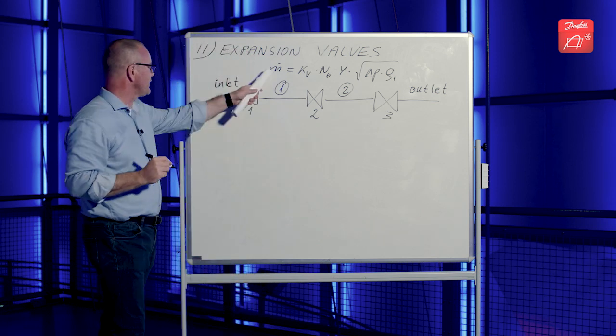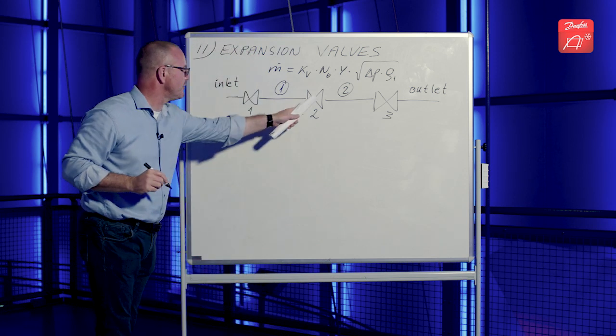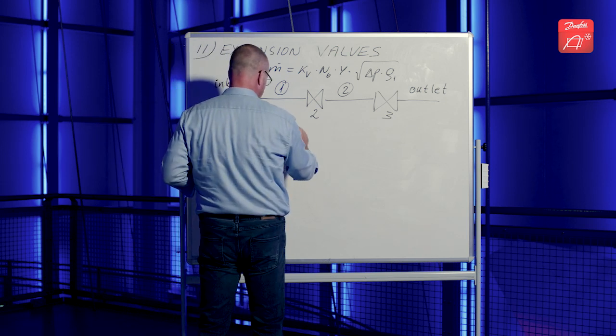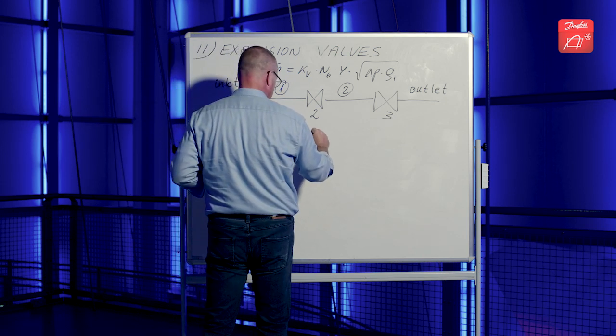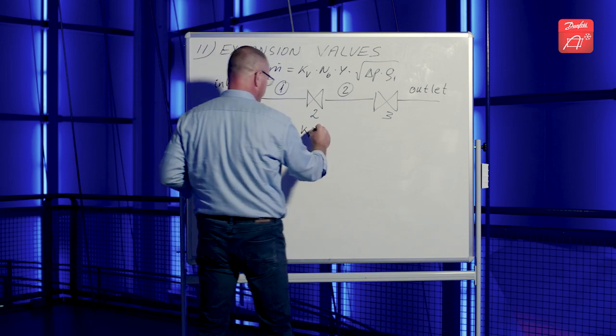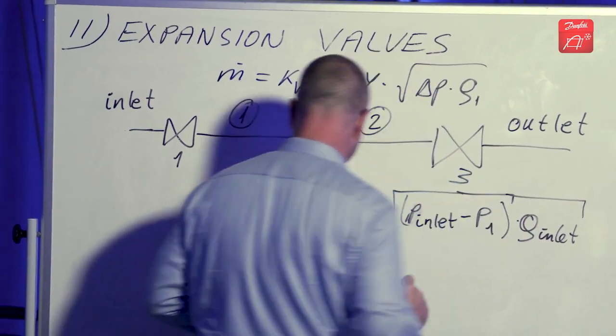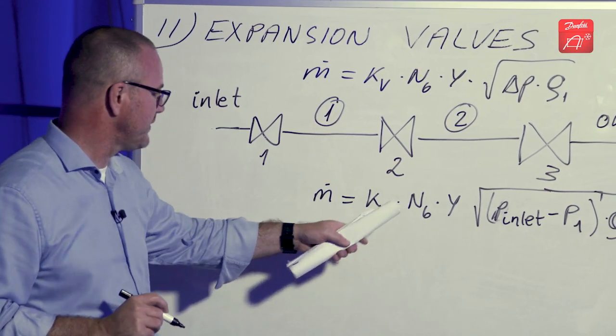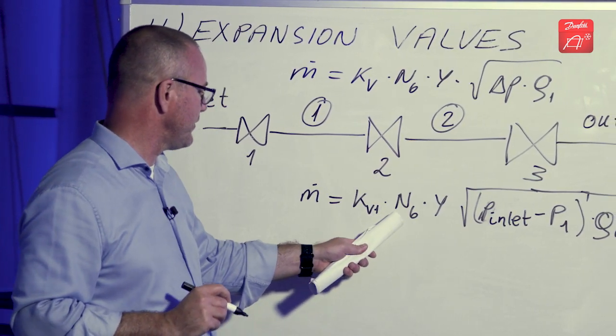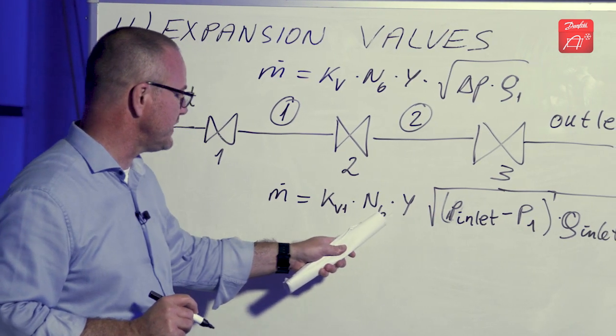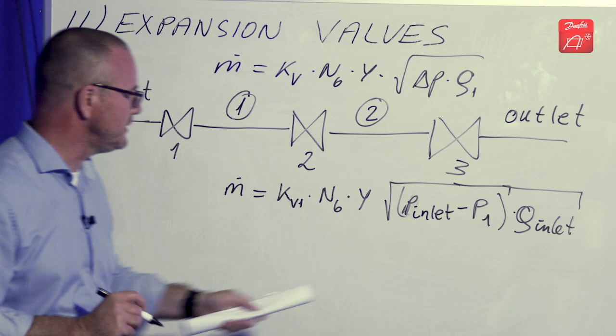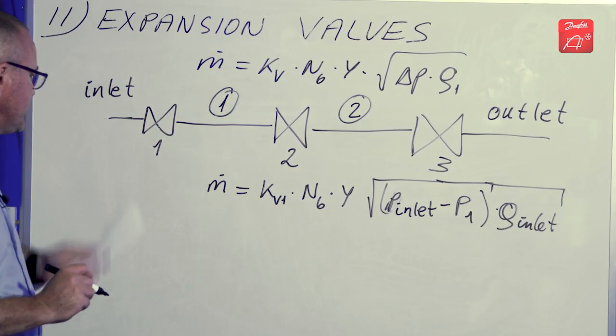So now we write down the valve equation for each of those three valves. So I have mass flow, KV value for the first valve. So for the first valve, we have the first KV value. We have the unit conversion constant. We have the net expansion factor. We have the difference between the inlet pressure and the pressure one and the inlet density.